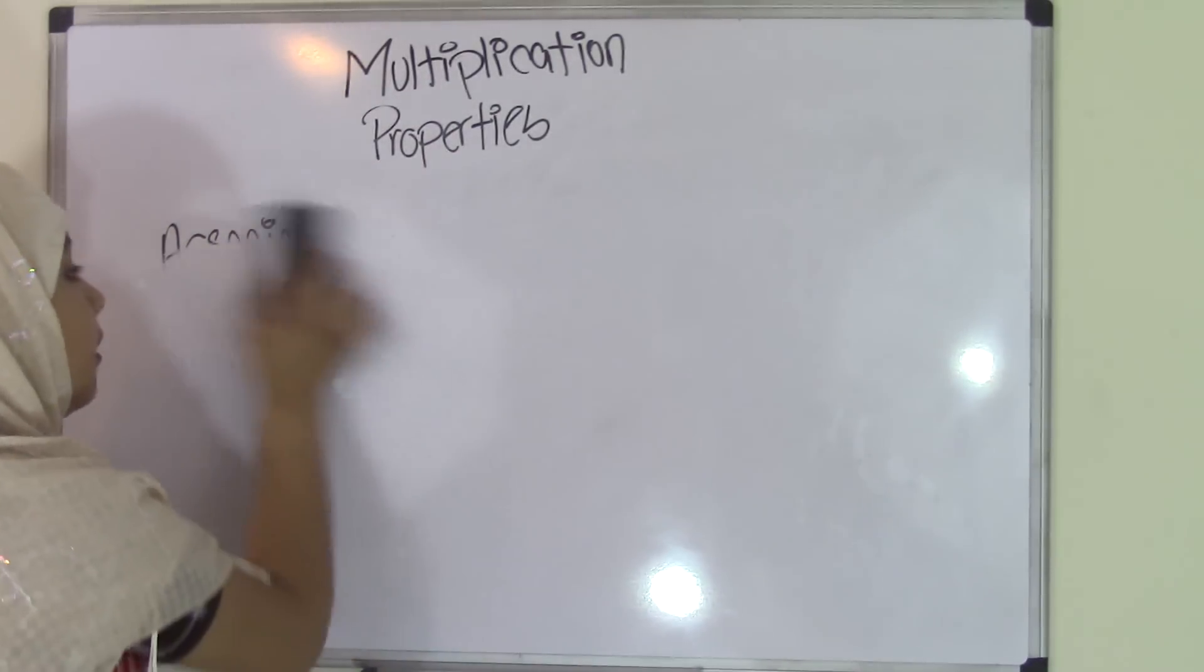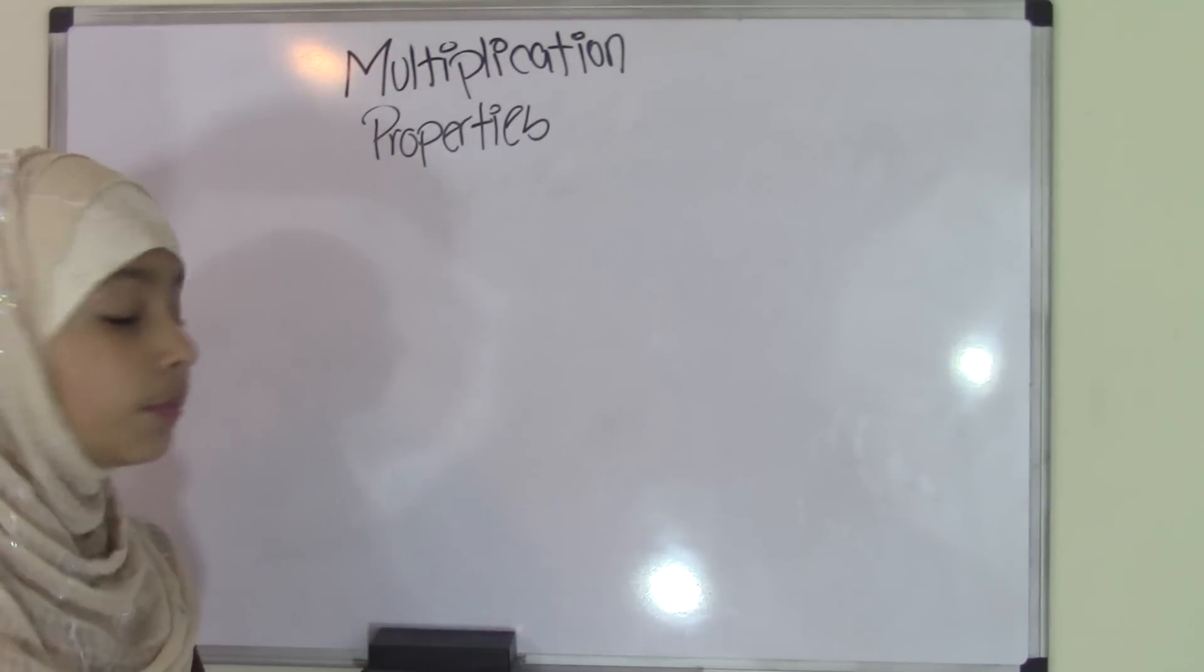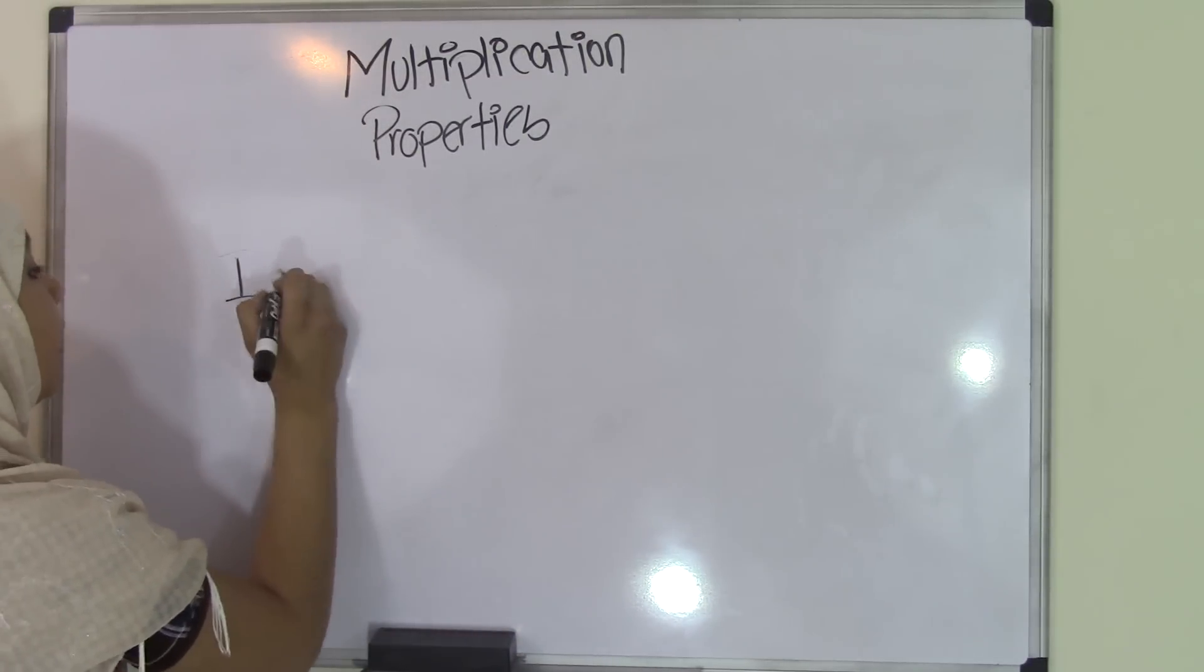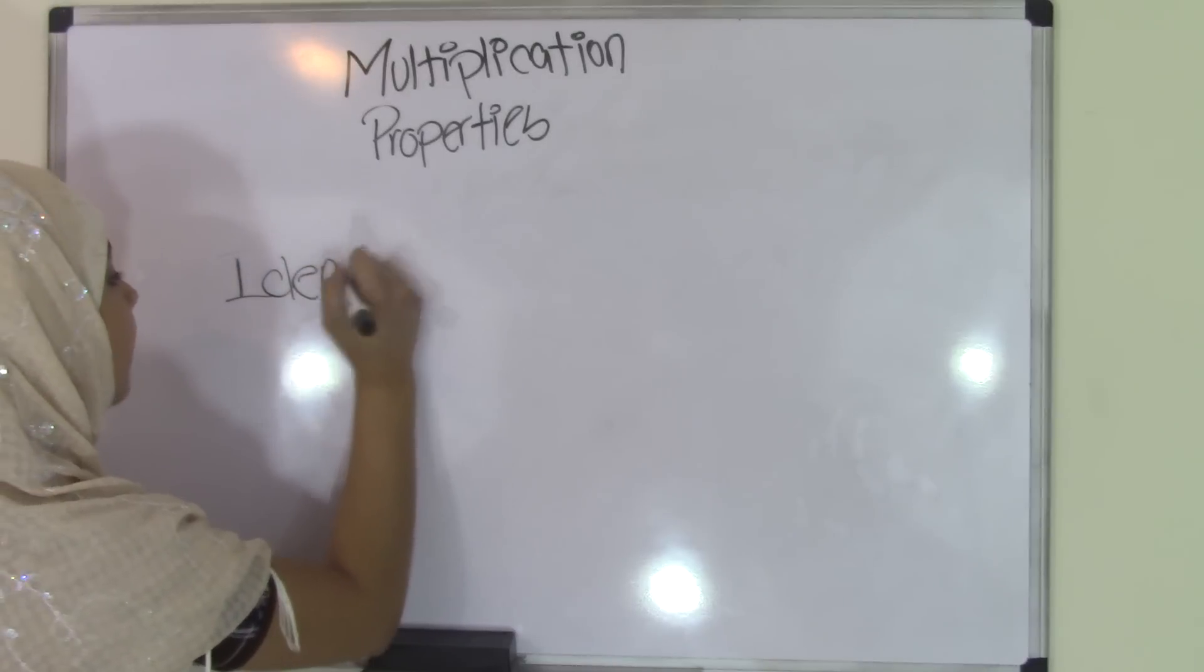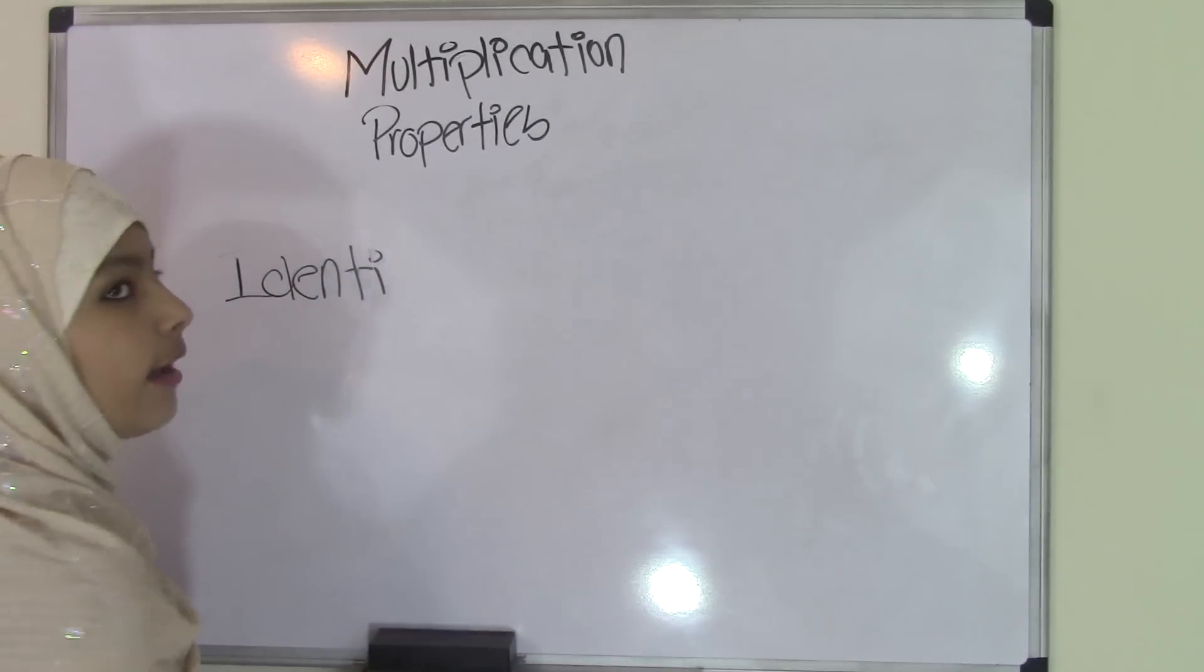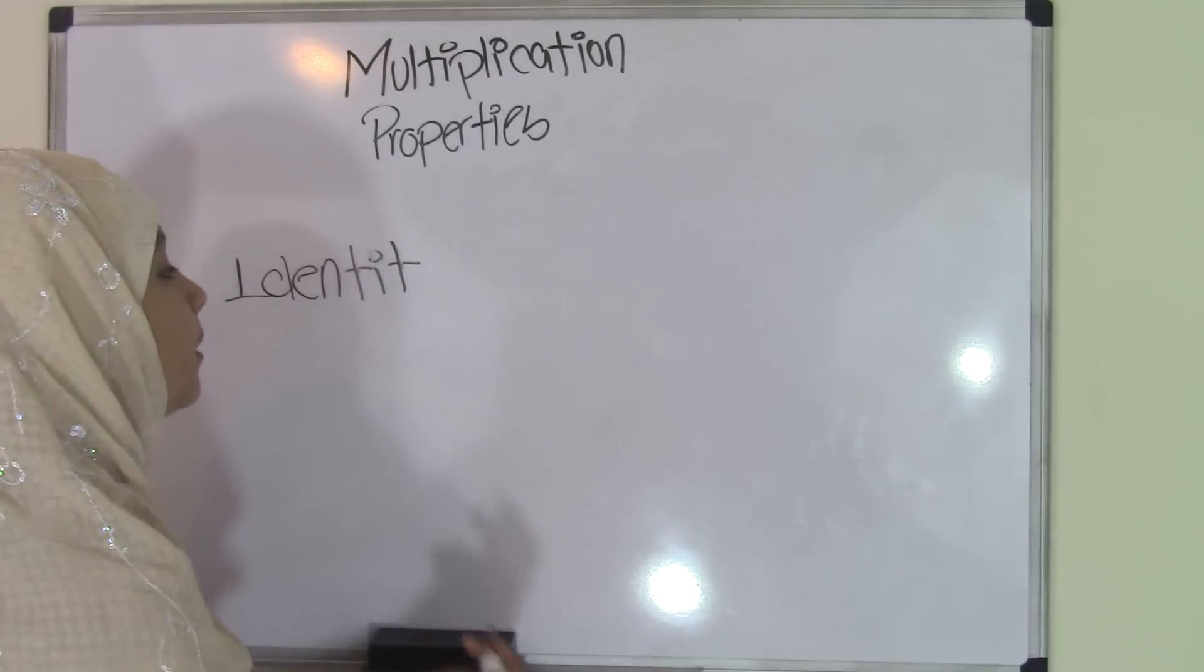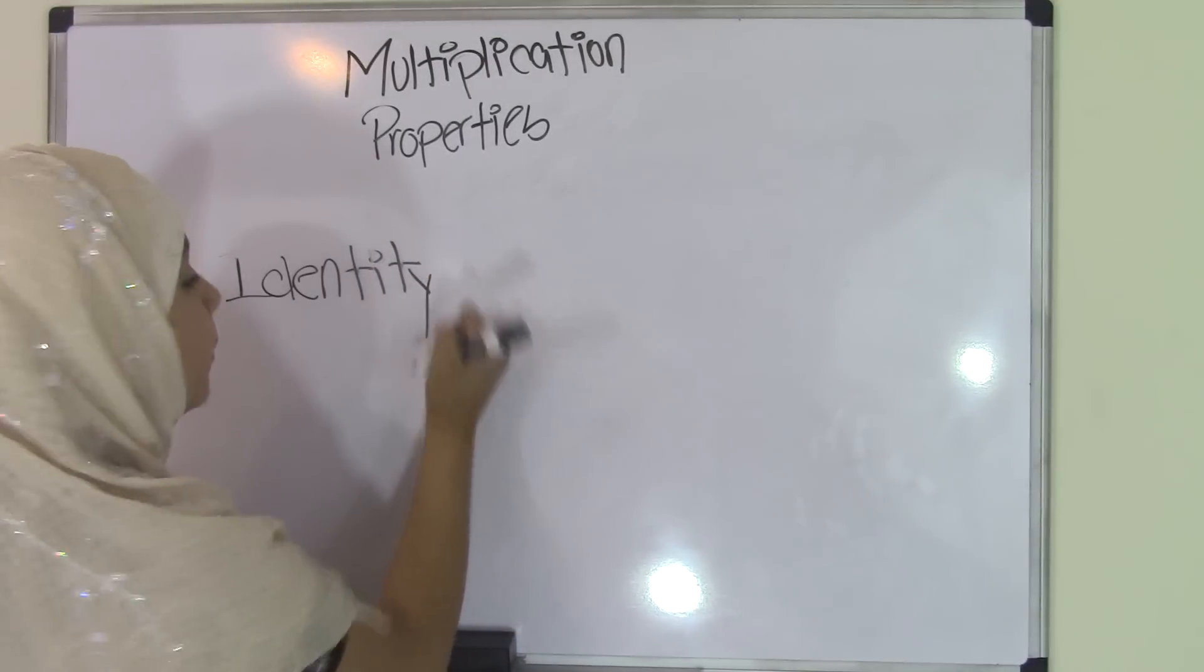Now, the third property of multiplication is the identity property. When I think of identity, it means the same thing as you, right? Like an identical person. Well, identity property in multiplication is pretty much the same thing, except it's math related.